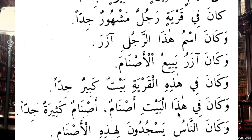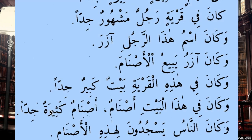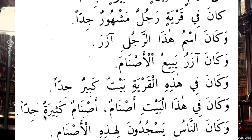Hadha and hadhihi do not impact the grammar themselves; they just indicate this masculine or this feminine. Wa kana fi hadha al-bayti asnamun — in this house there were idols — asnamun kathiratun jiddan, many very. Asnam is a non-human plural, and the non-human plural is always treated as feminine. That is why kathiratun has a ta marbuta here, showing it is feminine. Jiddan has no masculine or feminine form.